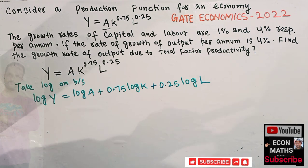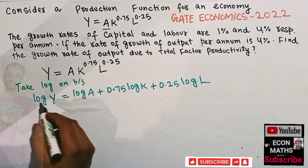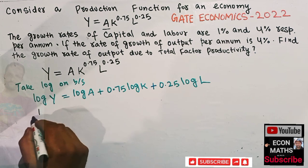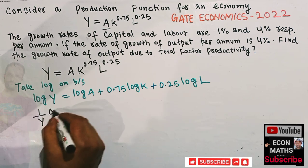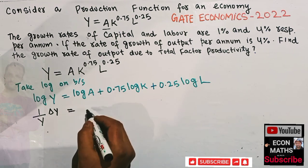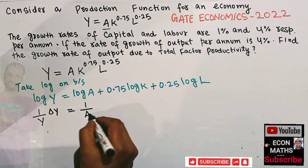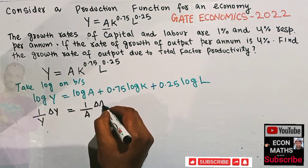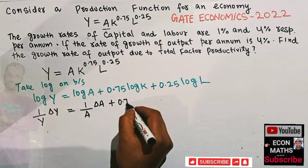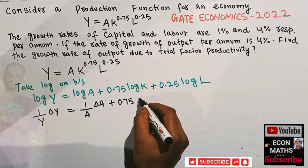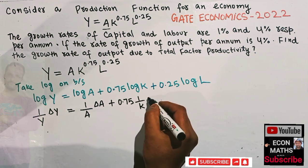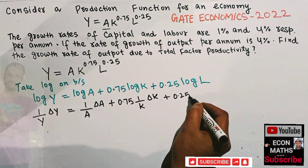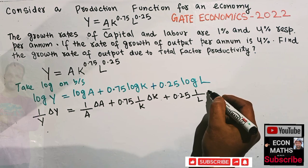Taking the total differential: the derivative of log y is (1/y) dy, equal to the derivative of log A which is (1/A) dA, plus 0.75 times (1/K) dK, plus 0.25 times (1/L) dL.